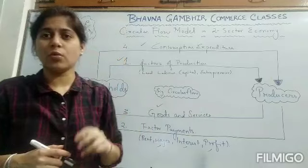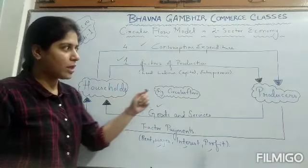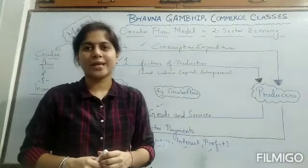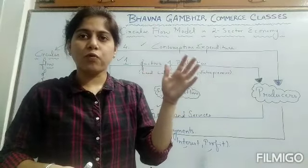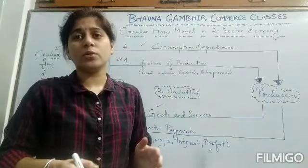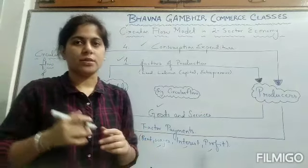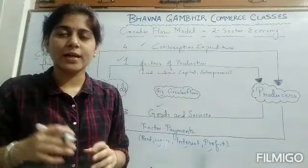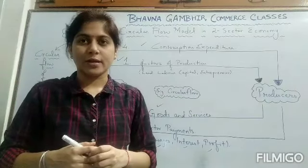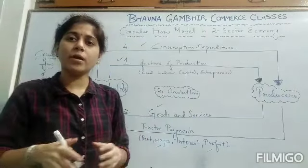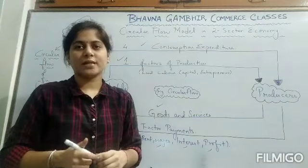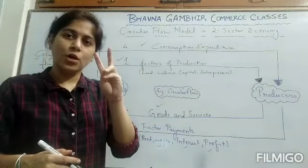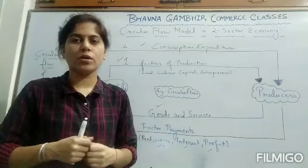This circular flow involves two sectors: one is household and the other is producer. The expenditure of one party is exactly equal to the income of the other party. When one person spends, the other person gains and receives income — this is the circular flow of income in the two-sector model, involving households and producers.